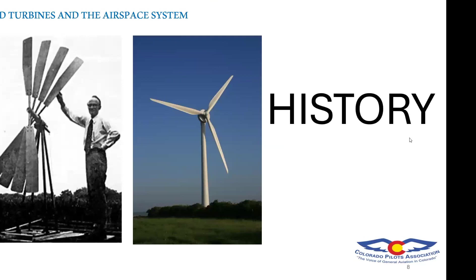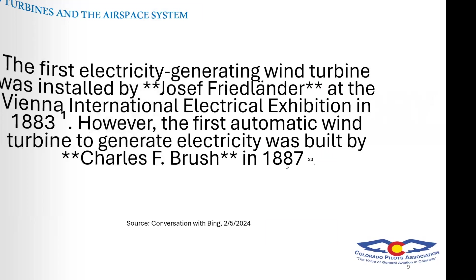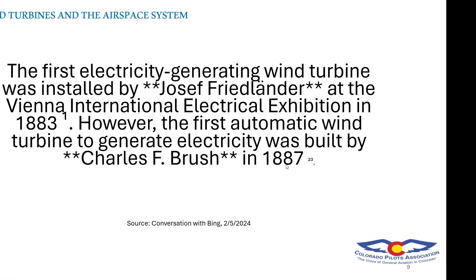A little bit about the history of wind turbines. From my research, the first electricity-generating wind turbine was installed by Joseph Freelander at the Vienna International Electrical Exhibition in 1883. However, the first automatic wind turbine to generate electricity was built by Charles F. Brush in 1887. There's a bit of wordplay between 'electricity generating' and 'first automatic,' but the dates are impressive. I was really surprised to see 1883 and 1887.